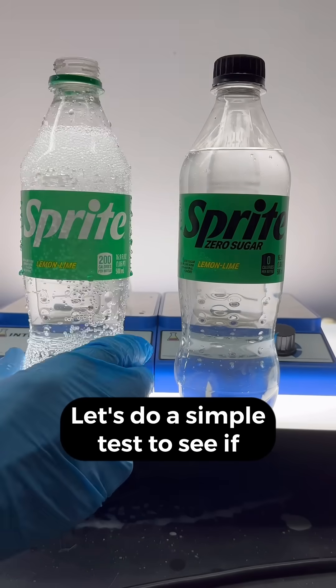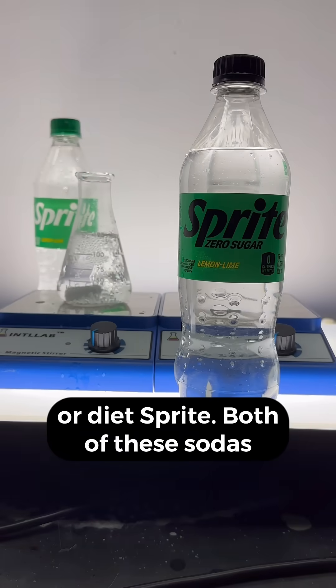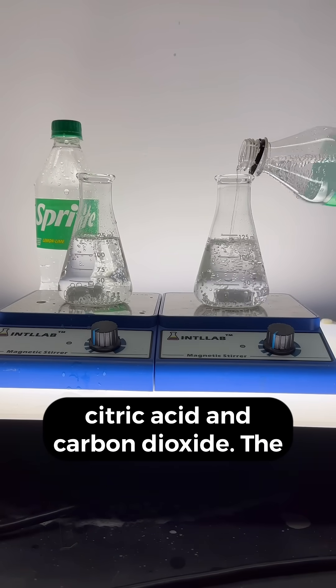Let's do a simple test to see if there's more acid in regular Sprite or diet Sprite. Both of these sodas contain two types of acid, citric acid and carbon dioxide.